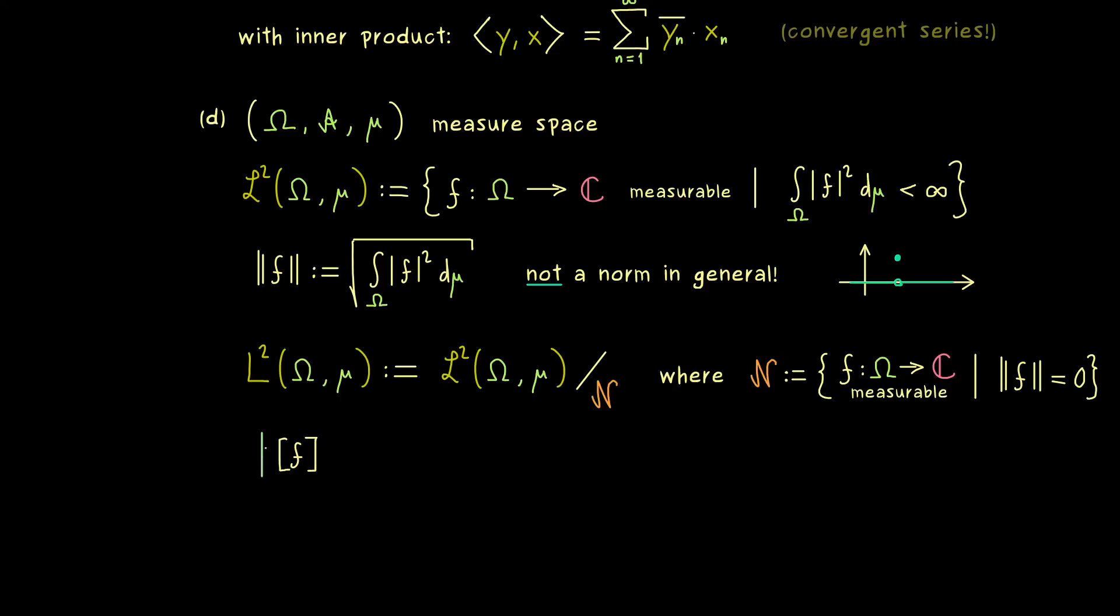Hence, in the following, one just looks at the equivalence class of a function f. And of course, for this one, we can also define a new norm. Simply by taking the original norm of the function f which represents the whole equivalence class. And then first we can check that this is well defined, and we get a full norm out in this case.